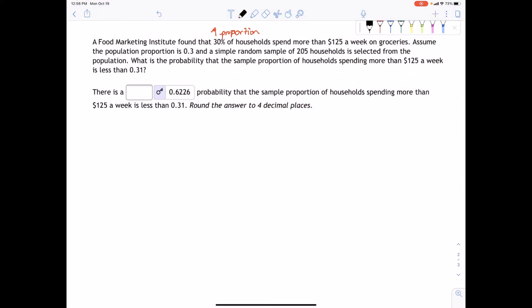So now the first thing we want to do is verify requirements. n equals 205 households. And the question would be, is this less than 5% of all households? We think about households worldwide. This is definitely less than 5% of all households in the world.